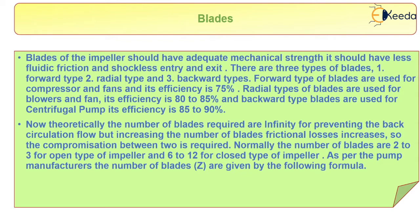The forward type blade is widely used for compressors and fans because its efficiency is 75 percent. The radial type blade is used for blowers and fans with efficiency up to 80 to 85 percent. The backward type is used for centrifugal pumps with efficiency from 85 to 90 percent. Theoretically, an infinite number of blades is required to prevent back circulation, but in practice the number of blades is 2 to 3 for open type impellers and 6 to 12 for closed type impellers.